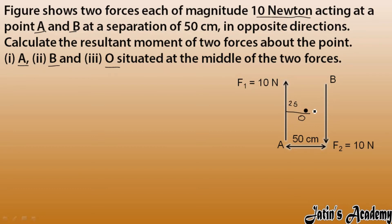O is at the middle, so this is 25 centimeters on each side. Now, A, B, and O are fixed points. When solving the first part, the fixed point is A.